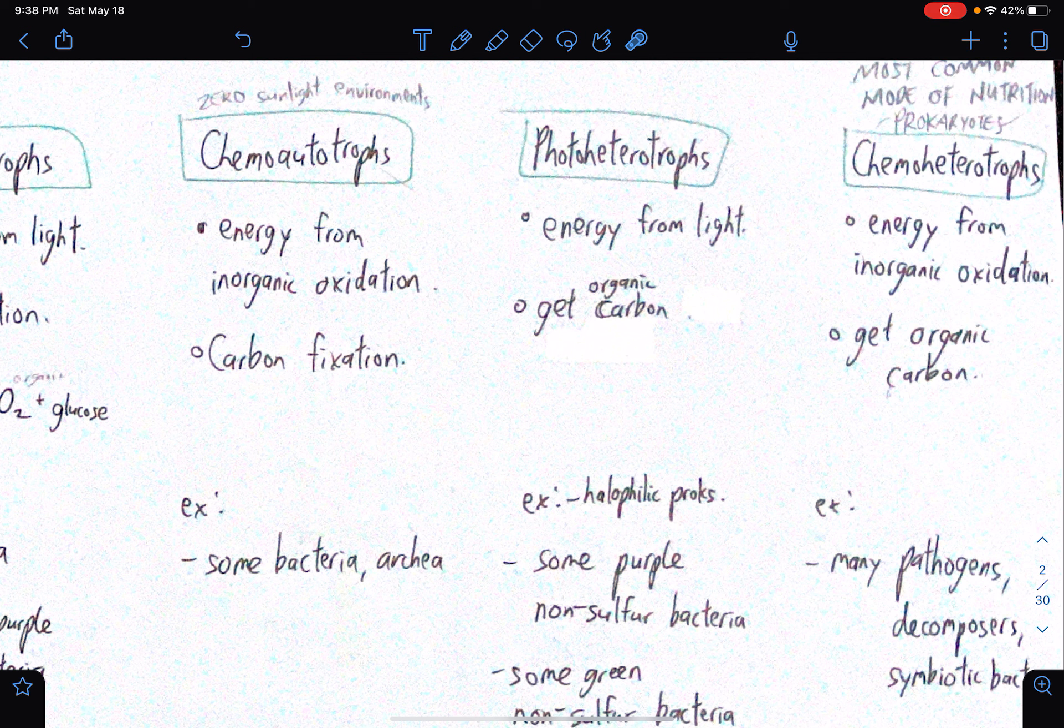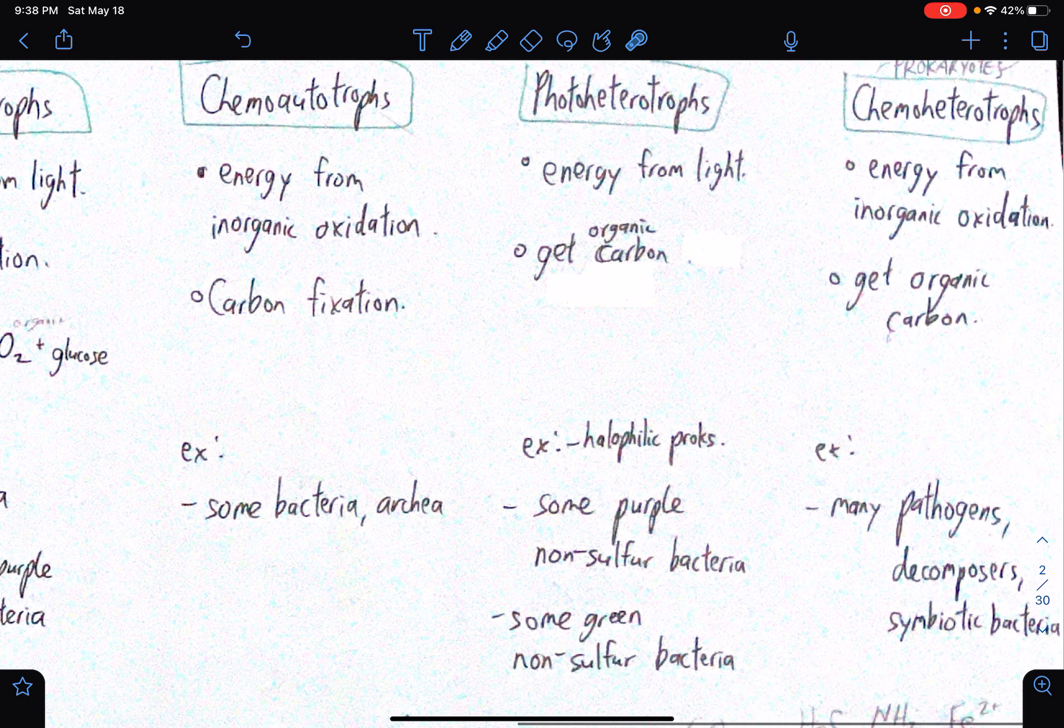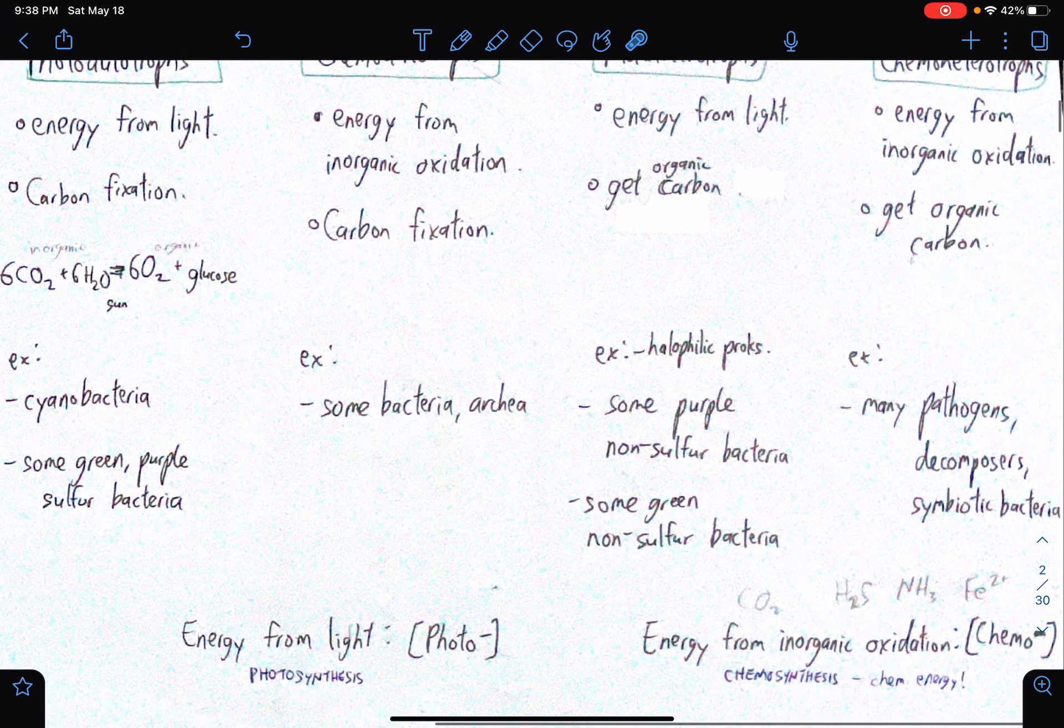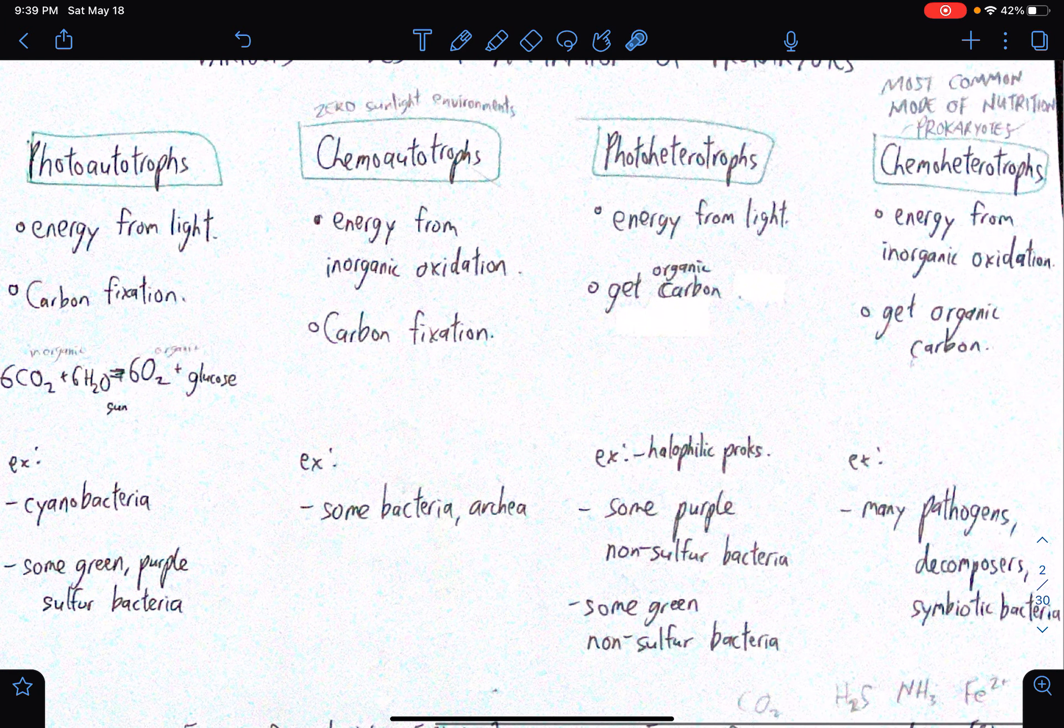And photo-heterotrophs, they get energy from light, and they get organic carbon. Yeah, I suppose this is different from carbon fixation. So for an example, we have halophilic prokaryotes, some purple non-sulfur bacteria, some green non-sulfur bacteria, and yeah, that's it.